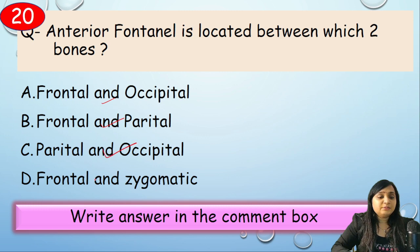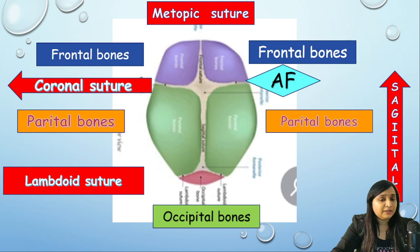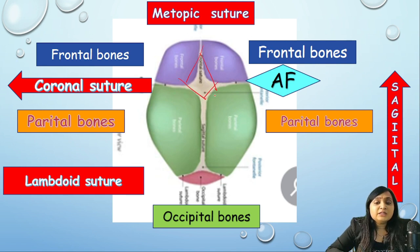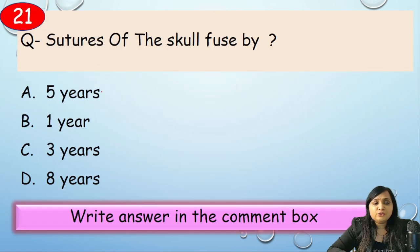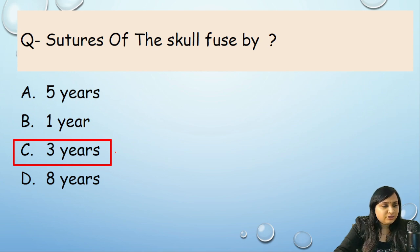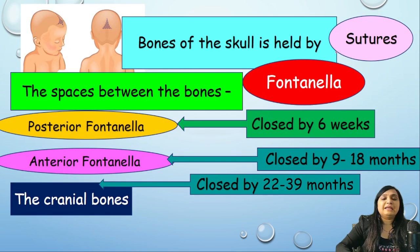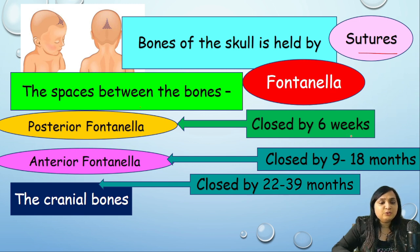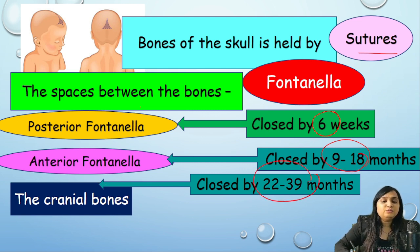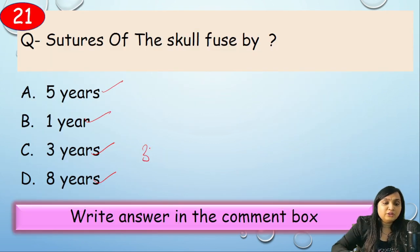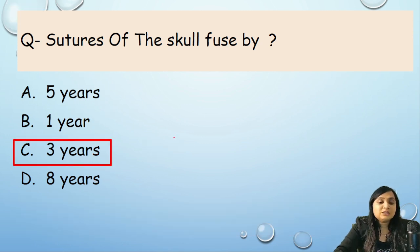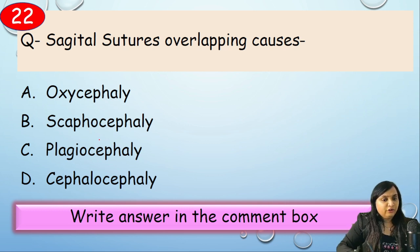Anterior fontanelle is the opening between skull bones — specifically between the frontal and parietal bones. Question: skull sutures fuse by — 5 years, 1 year, 3 years, or 8 years? Correct answer: option C, 3 years. Posterior fontanelle closes by 6 weeks; anterior fontanelle closes by 9 to 18 months; cranial bones fuse between 22 to 39 months. The closest answer to 36 months is 3 years, so option C is correct.